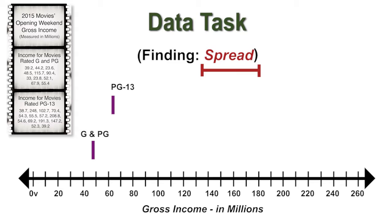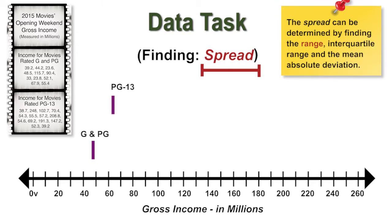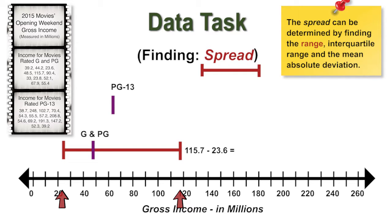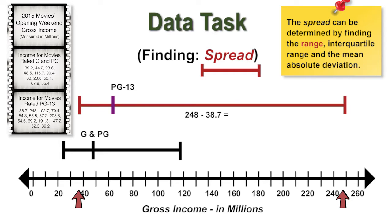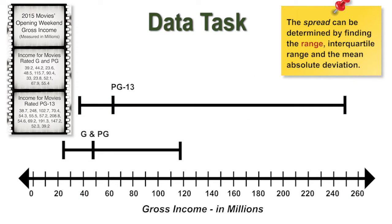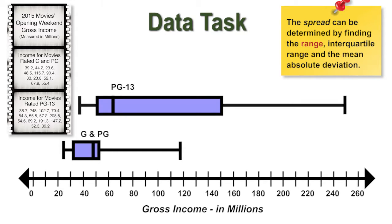Next, let's examine the distribution using the spread. The spread can be determined by finding the range. The range for G and PG is 115.7 subtract 23.6, or about 92 million. And for PG-13, it is 248 subtract 38.7, or about 209 million. The interquartile range for G and PG is about 35 million, and for PG-13 is about 104 million.